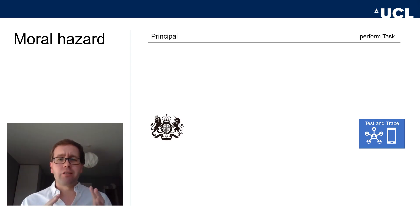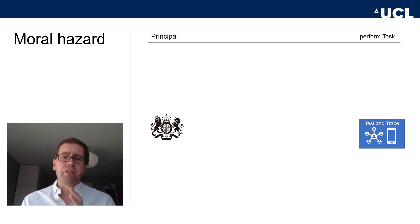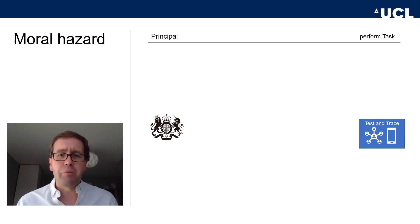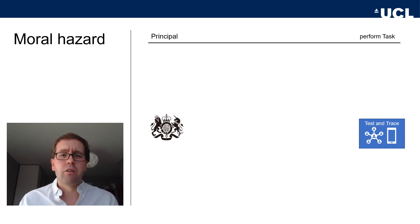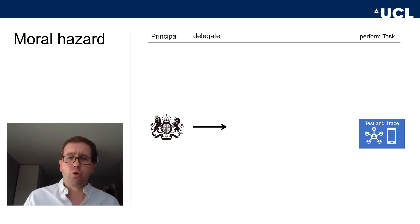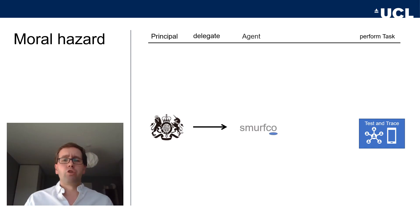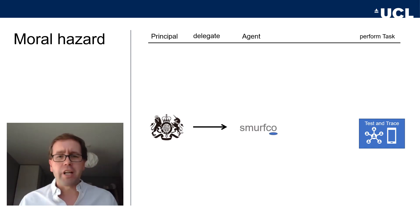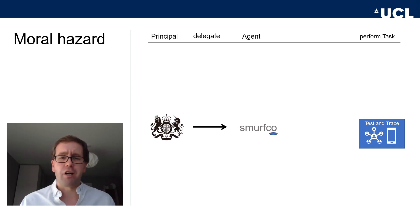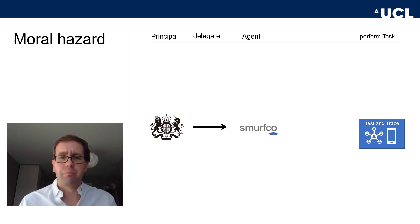In general, the principal wants to delegate the task to some agents to perform it as well as possible. The government delegates this task to an agent — in this example, the outsourced service provider, though we can think of bureaucrats as agents as well.